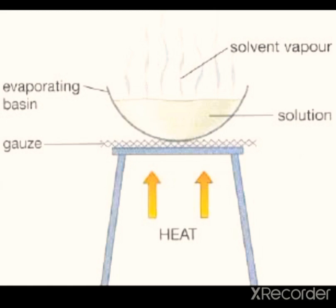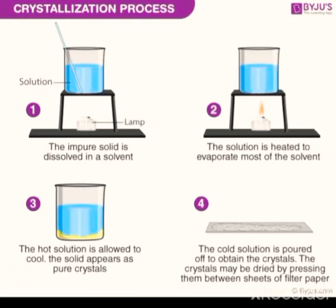Then comes crystallization. The word 'crystal' implies the formation of crystals, so crystallization is a slow evaporation process that yields solid components at room temperature. For example, pure sugar is obtained from a sugar solution by crystallization. First, the sugar solution is heated to evaporate water at a faster rate. When very little or no water is left, the solution is cooled, and on cooling the sugar starts separating out in the form of crystals.